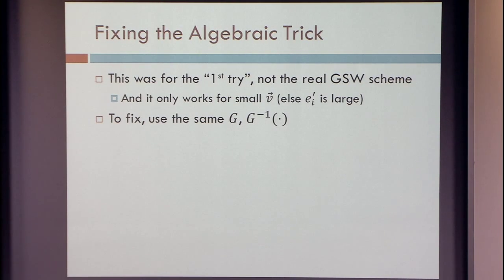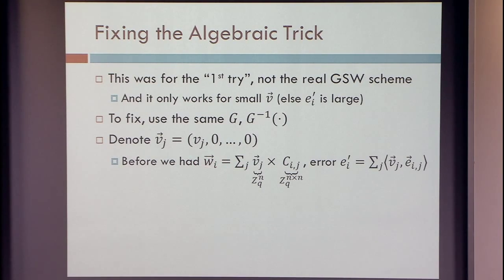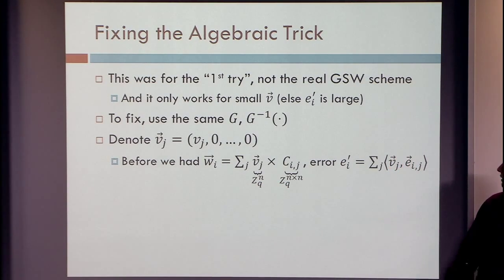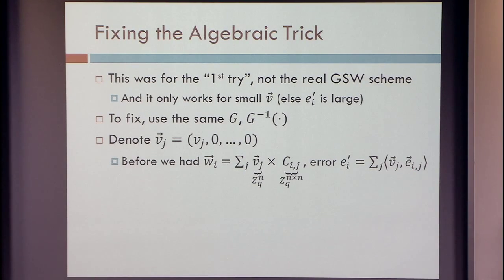The error term we got was an inner product between our weight vector and the original error. If our weight vector is not small, then the error is not small. We need to fix it using the same G and G inverse we had before. The weights are these Vj integers, and for each weight we're going to give it its own vector — put it at the first entry and fill with zeros. With this notation, the vector Wi was just the sum of these vectors Vj multiplied by the full matrix ciphertext. We're going to apply G to everything: now these are real GSW matrices — tall and skinny — and we use G inverse. We take each entry and express it in bit representation.